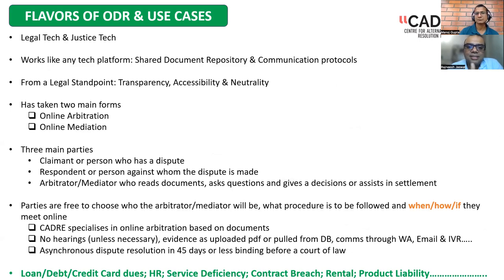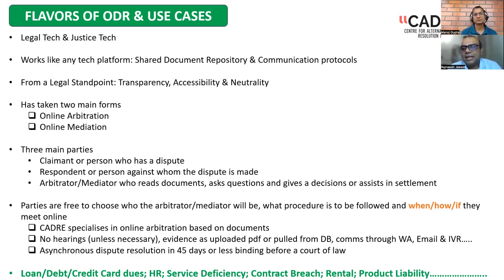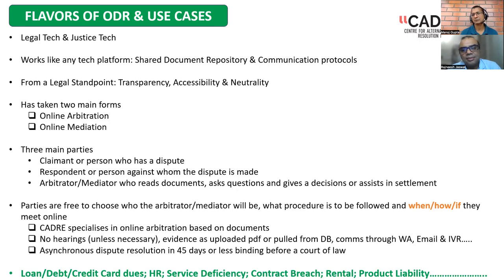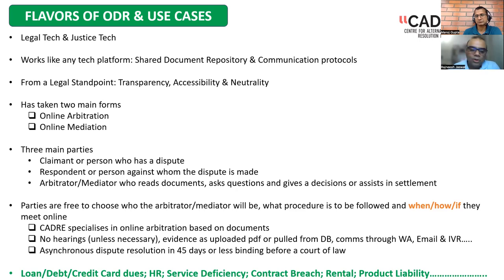It works like any other platform — there are shared document repositories and communication protocols. From a legal standpoint, it provides transparency, accessibility, and neutrality for all citizens. It takes two main forms: online arbitration and mediation. Arbitration is a way where parties decide who their judge — the arbitrator — will be. If Manoj and I have a dispute, we decide that person X is our arbitrator and whatever decision that person gives is binding on both of us. Unless that person has committed fraud or acted illegally, that decision is binding and the matter ends. You don't need to go to court.